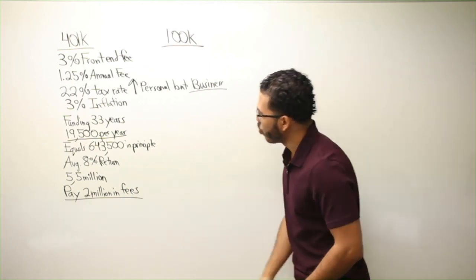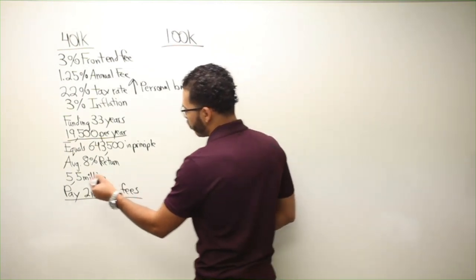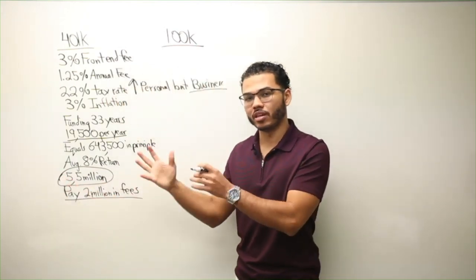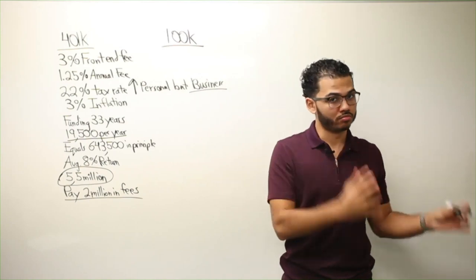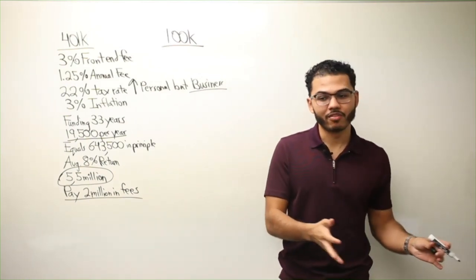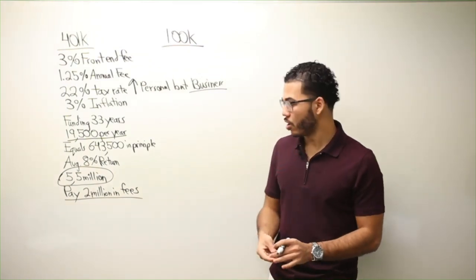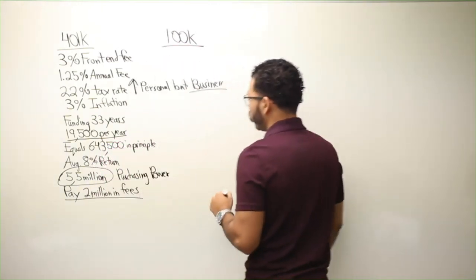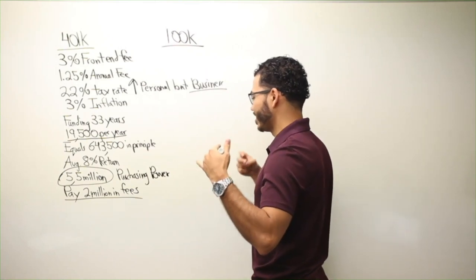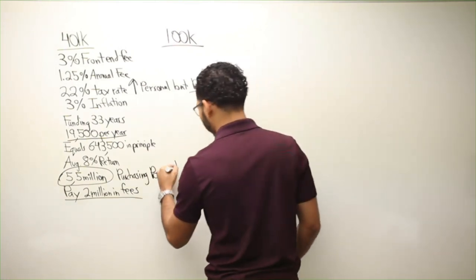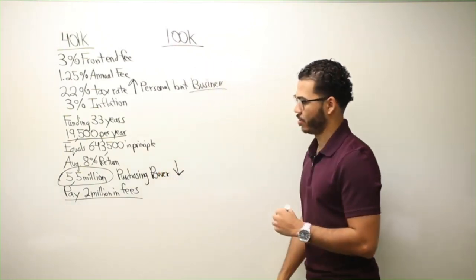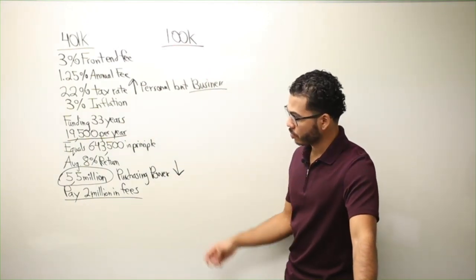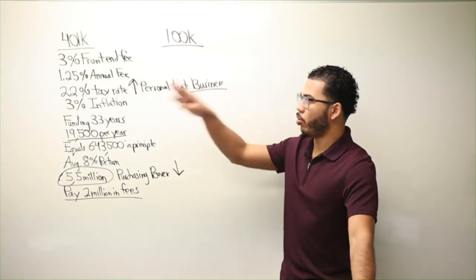And then the worst part about this 5.5 million is in 33 years, 5.5 million will buy you much less than 5.5 million today. So your purchasing power would be significantly less in 33 years than today. And this goes back to my point.